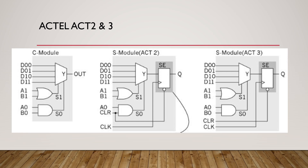In ACT-2 and ACT-3, we saw how ACT-1 can program any kind of Boolean function. Now we are going to see the ACT-2 and ACT-3 versions. In ACT-2, it uses a separate S module and C module. The C module is used to program combinational logic circuits, whereas the S module can be programmed to act as a sequential logic circuit. The C module is common for both ACT-2 and ACT-3 versions, but for ACT-2 and ACT-3, separate S modules are used.